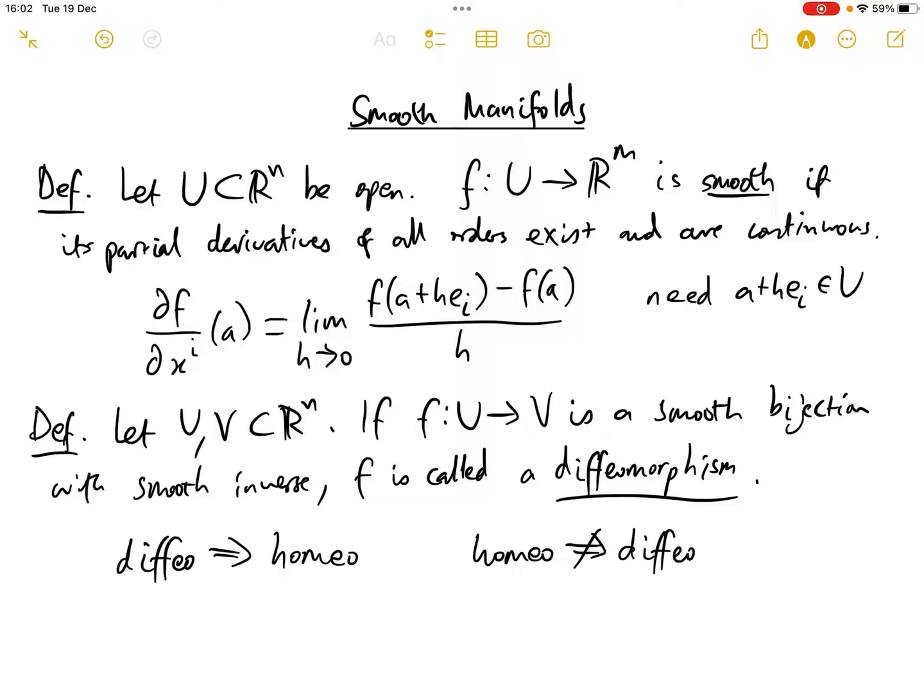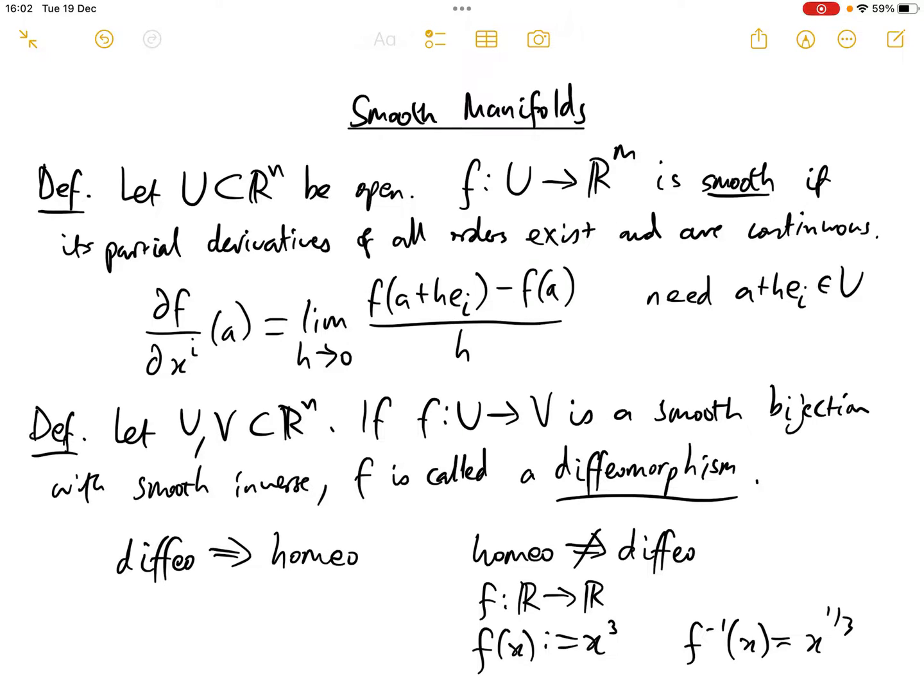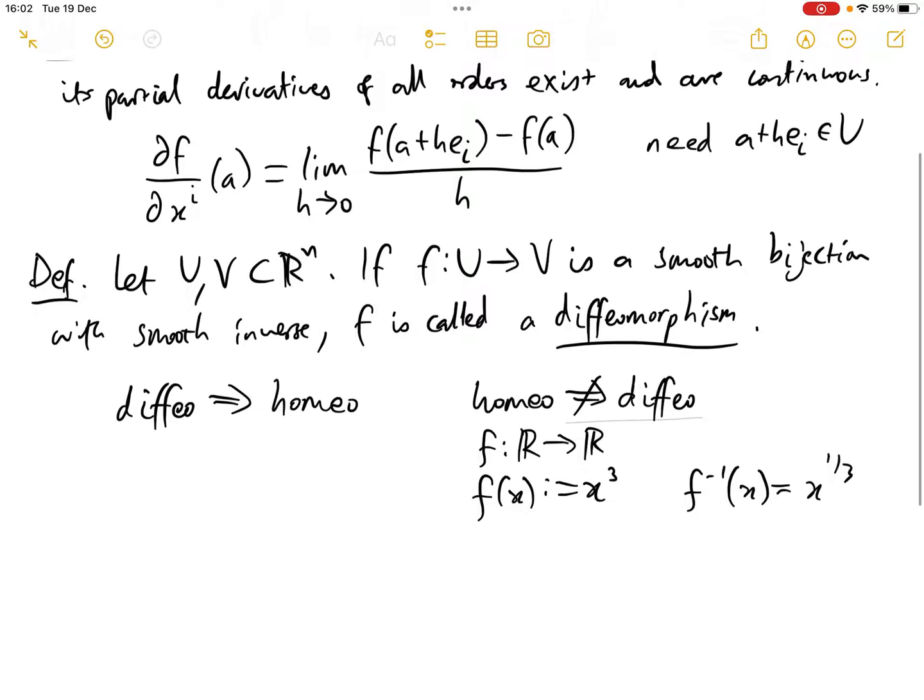So an example of a homeomorphism that's not a diffeomorphism, we could take f from R to R defined by f(x) = x^3. And then the inverse isn't differentiable at the origin, so certainly it's not smooth there. Because obviously the inverse here would be x to the third. So next.